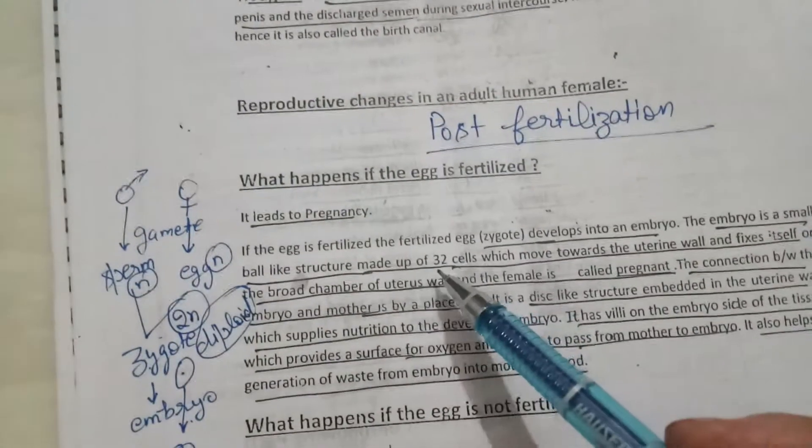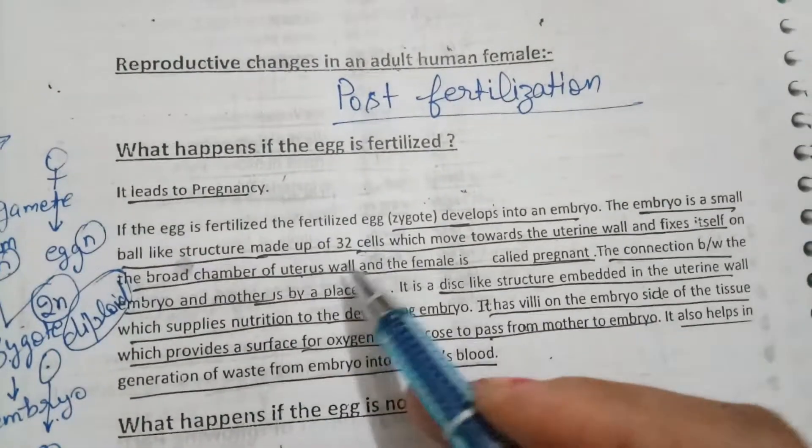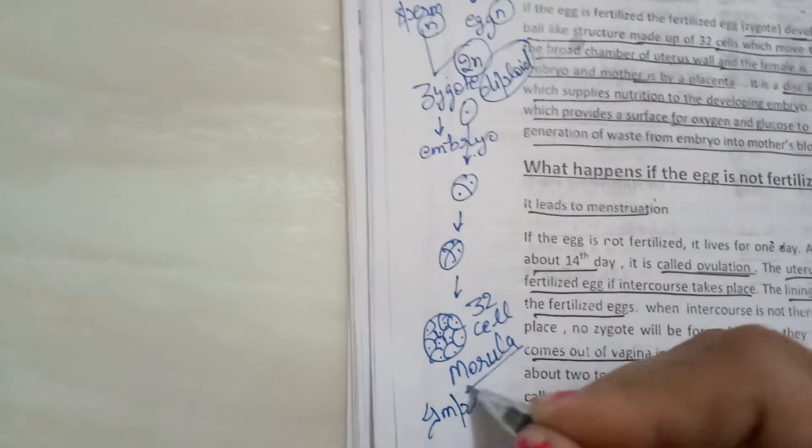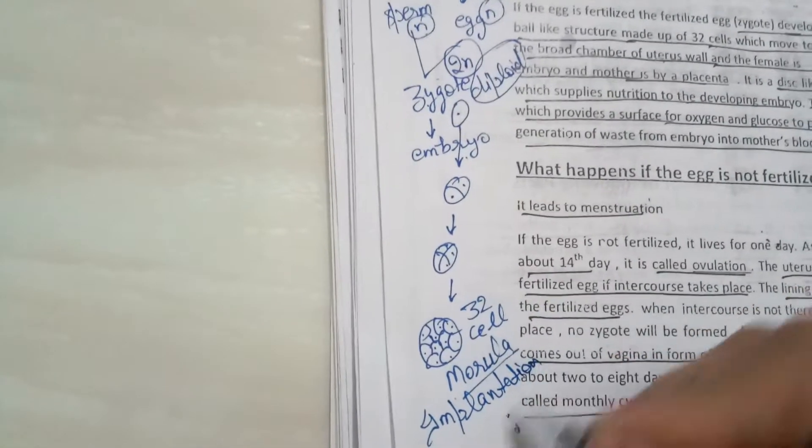In the last stage, 32 cells are formed. The stage where 32 cells are formed is called morula. This morula will then set up inside the uterus in the broader chamber — this is when the lady is pregnant. The process by which morula settles inside the uterus is called implantation.